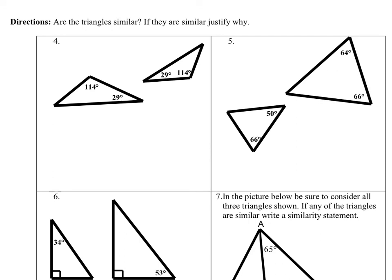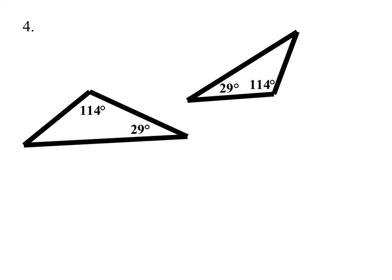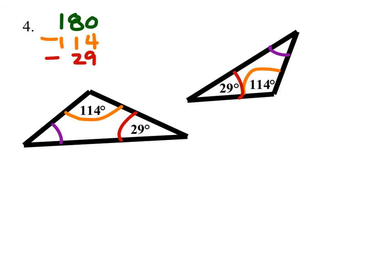Number four: this 114-degree angle corresponds with the other triangle's matching angle, and this 29-degree angle corresponds with the other one. Since those two pairs are congruent, the third one automatically has to be the same. We could calculate it: 180 minus 114 minus 29 equals 37 degrees for both triangles. So yes, they are similar.